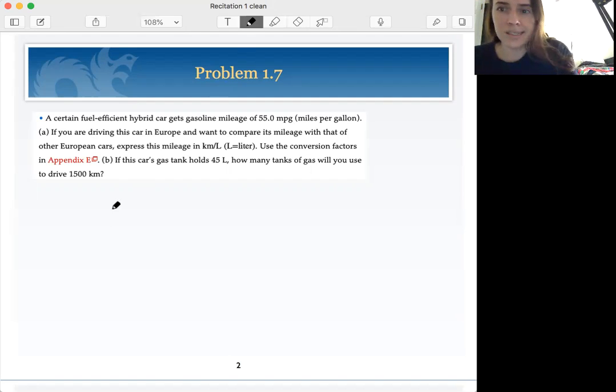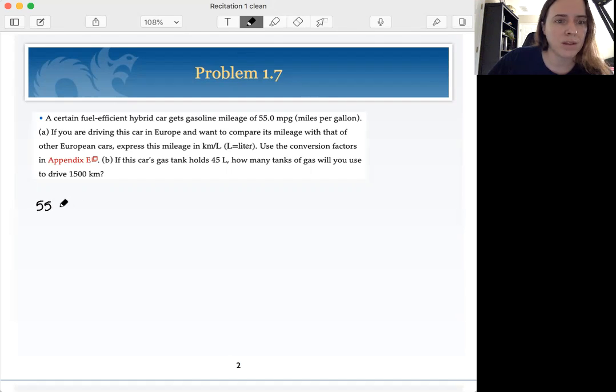Okie-dokie. So this is a unit conversion problem. We are driving this car in Europe and we want to compare its mileage. So we want to express this mileage in kilometers per liter. So we start off, we have 55 miles per gallon.